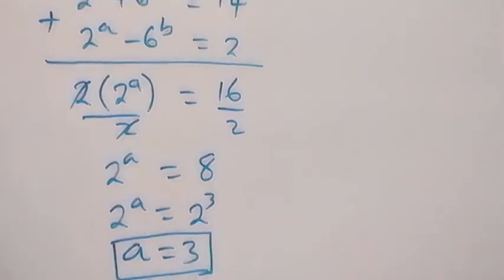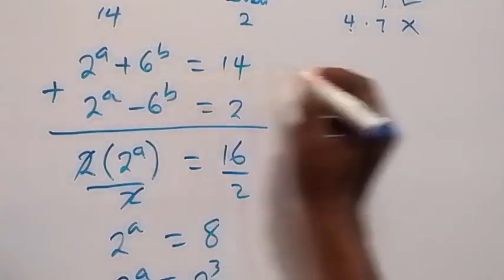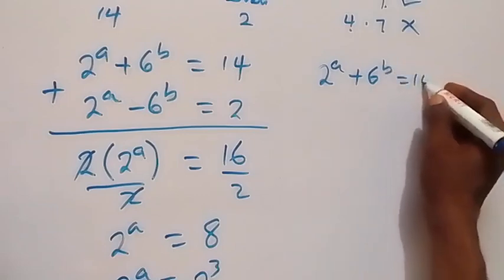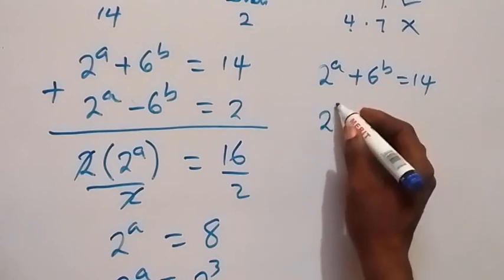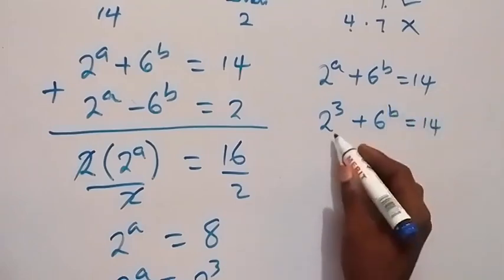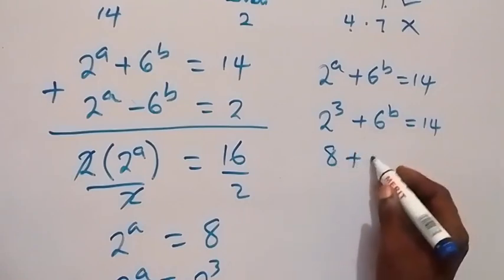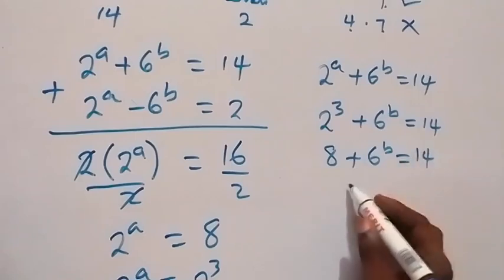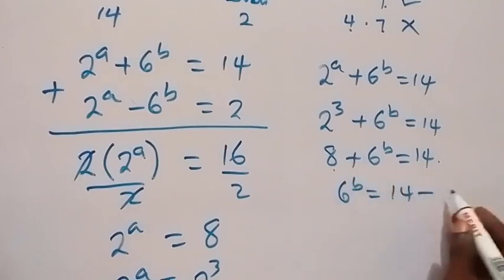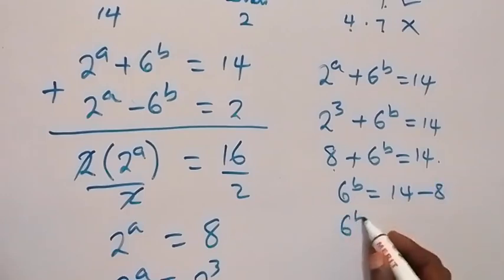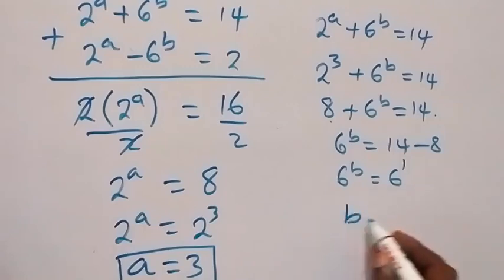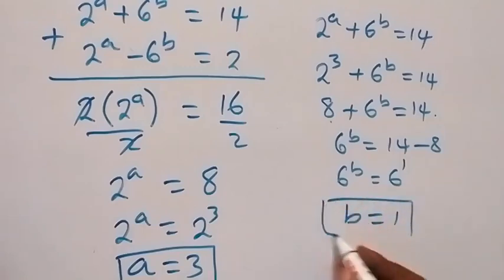To find b, we use the first equation: 2 raised to the power a plus 6 raised to the power b equals 14. Replacing a with 3: 2 raised to the power 3 plus 6 raised to the power b equals 14. Since 2³ = 8, we have 8 plus 6 raised to the power b equals 14, so 6 raised to the power b equals 6, which is 6 raised to the power 1. Since the bases are equal, b equals 1.